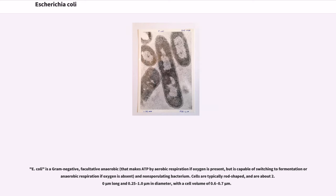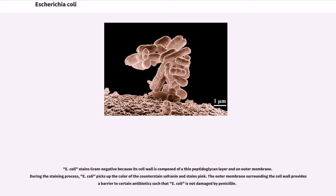E. coli is a gram-negative, facultative anaerobic and non-sporulating bacterium. Cells are typically rod-shaped, and are about 2.0 μm long and 0.25 to 1.0 μm in diameter, with a cell volume of 0.6 to 0.7 μm³. E. coli stains gram-negative because its cell wall is composed of a thin peptidoglycan layer in an outer membrane. During the staining process, E. coli picks up the color of the counterstain safranine and stains pink. The outer membrane surrounding the cell wall provides a barrier to certain antibiotics such that E. coli is not damaged by penicillin.